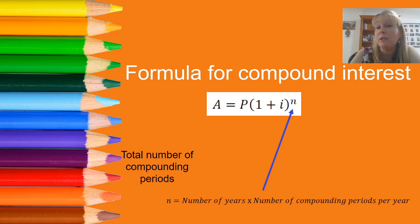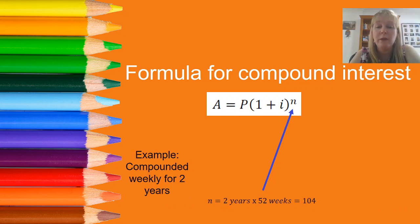The power of n is equal to the number of years multiplied by the number of compounding periods that there are per year and that gives us our total number of compounding periods. For example, if we were compounding weekly for two years, then n would be equal to two years multiplied by 52 weeks, which would be 104 compounding periods altogether.